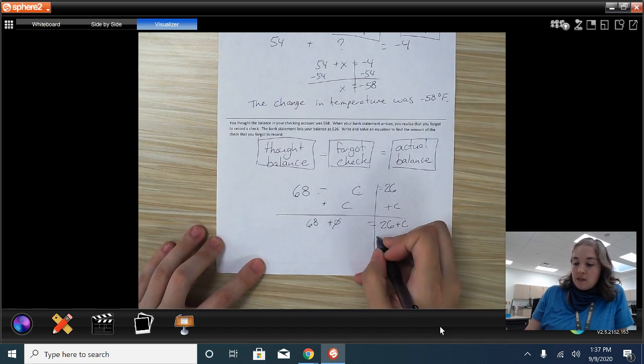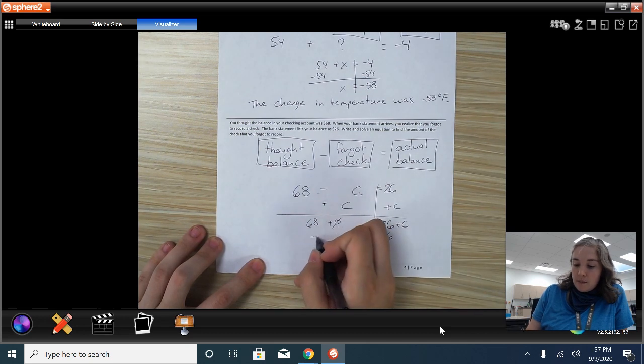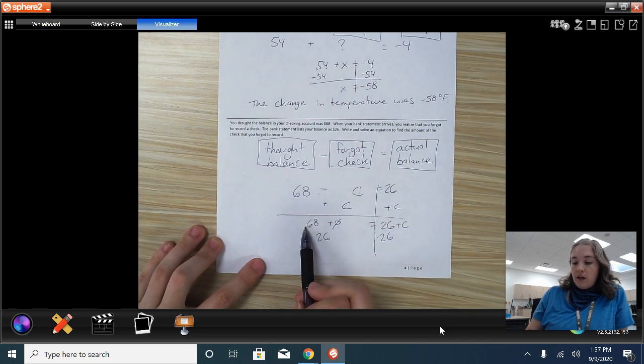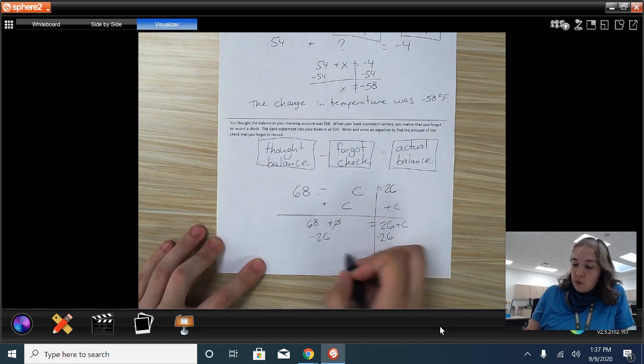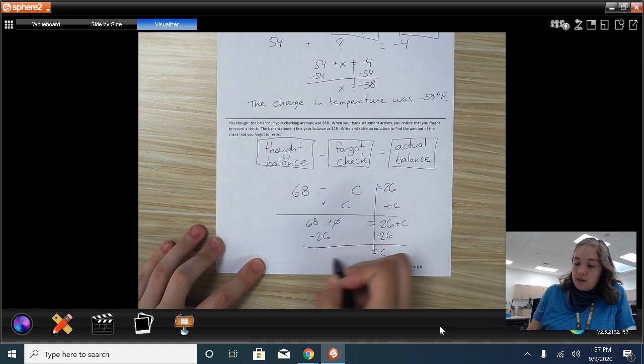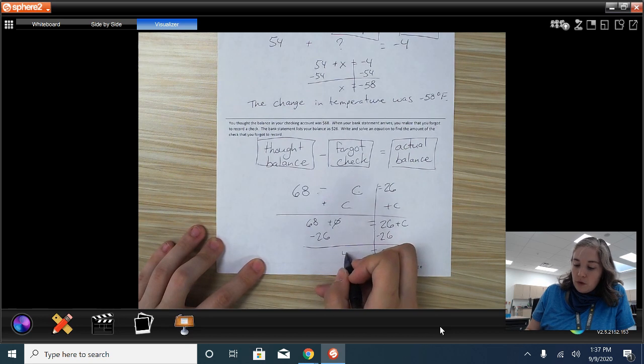This is a positive 26. The opposite of a positive is negative. So minus 26 on both sides. So that means we've got 68 plus 0, which is still 68, minus 26. We end up with a C is equal to 42. It's an expensive check.